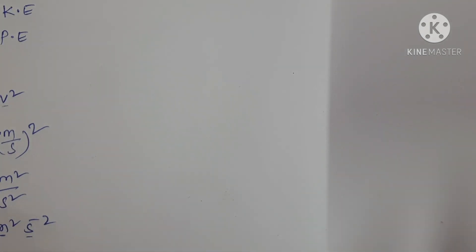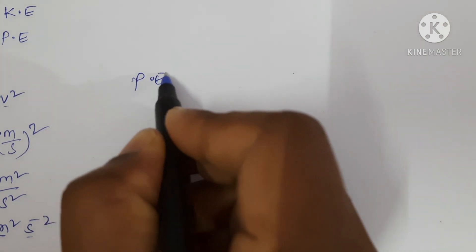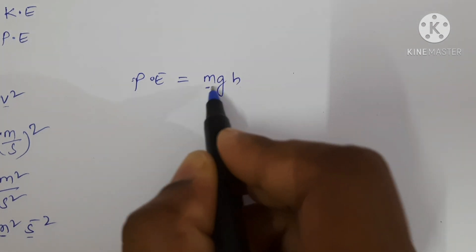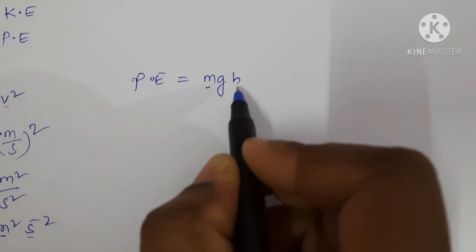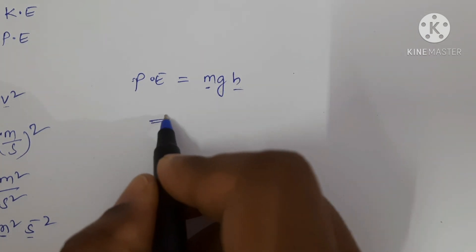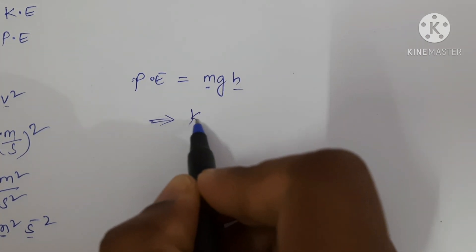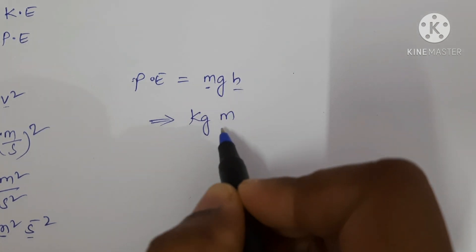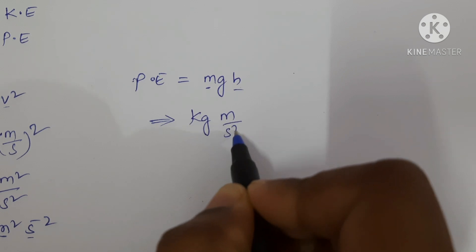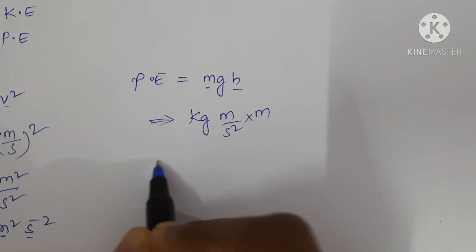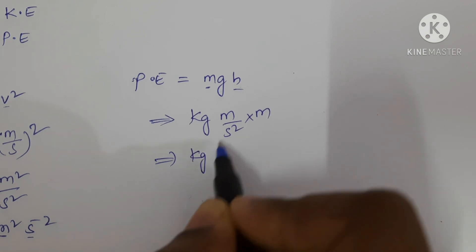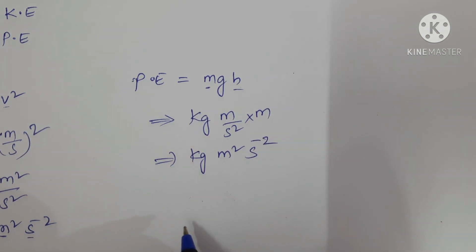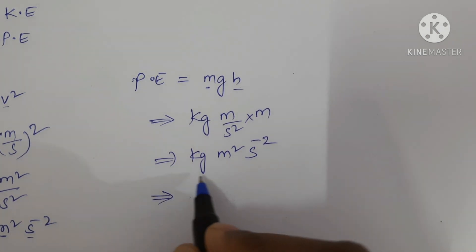Let us see for potential energy. The formula for potential energy is equal to mgh, where m is the mass, g is the acceleration due to gravity, and h is the height. The SI units are: kilogram for mass, meter per second squared for acceleration due to gravity, and meter for height — giving us kg times meter squared, with second squared in the denominator, so s to the power of minus 2.